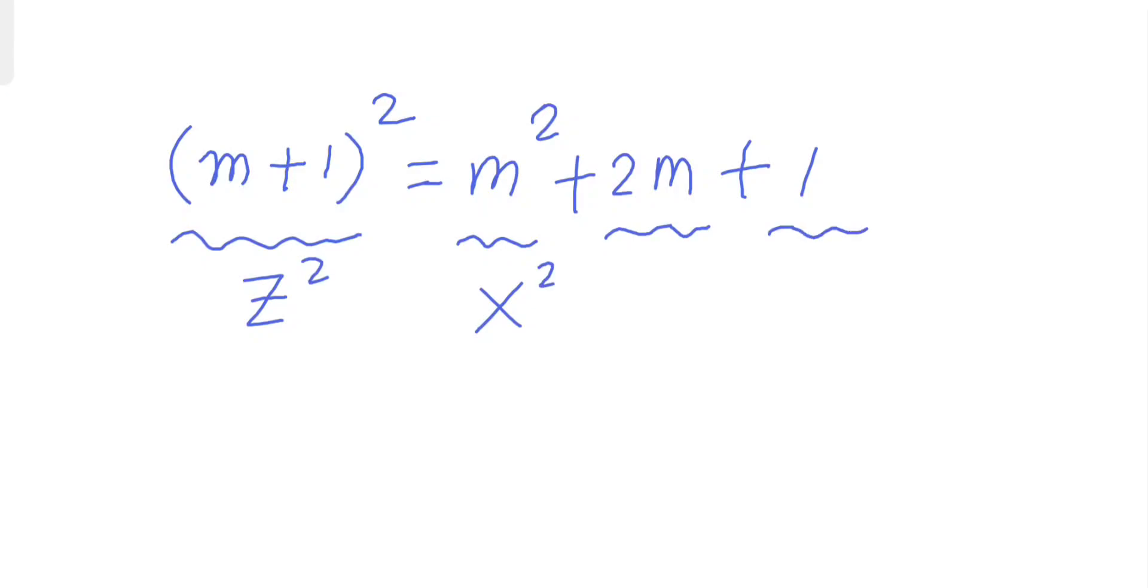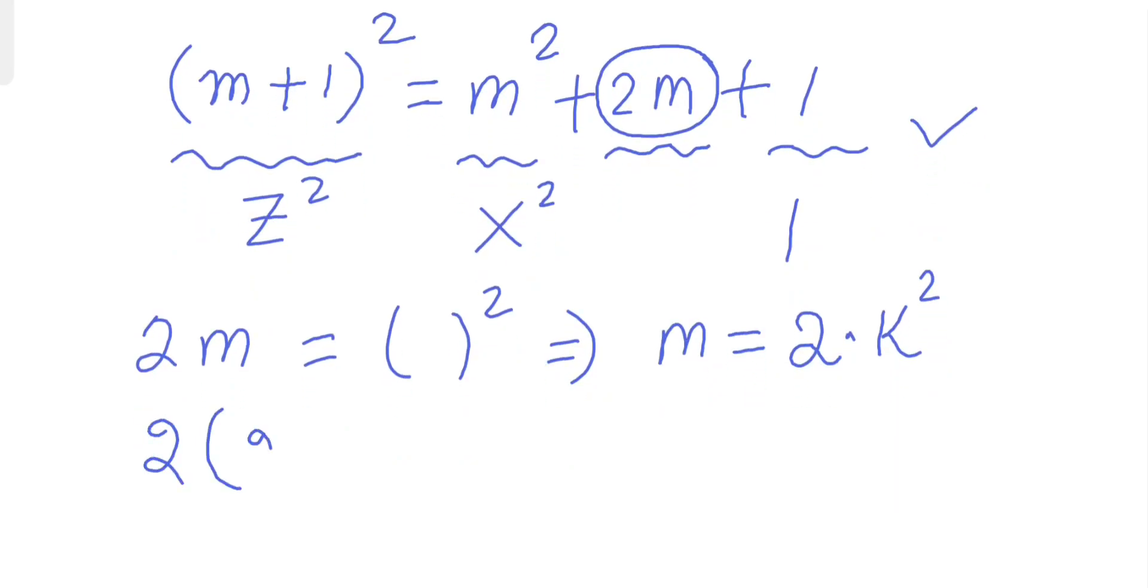Okay, but this is one, yes. So if we can make this middle term a perfect square, then we can convert this equation into our formula. Let's see how to make 2m a square. Well, it's very easy. If I take m = 2k², then this becomes 2(2k²) which is 4k², a perfect square.